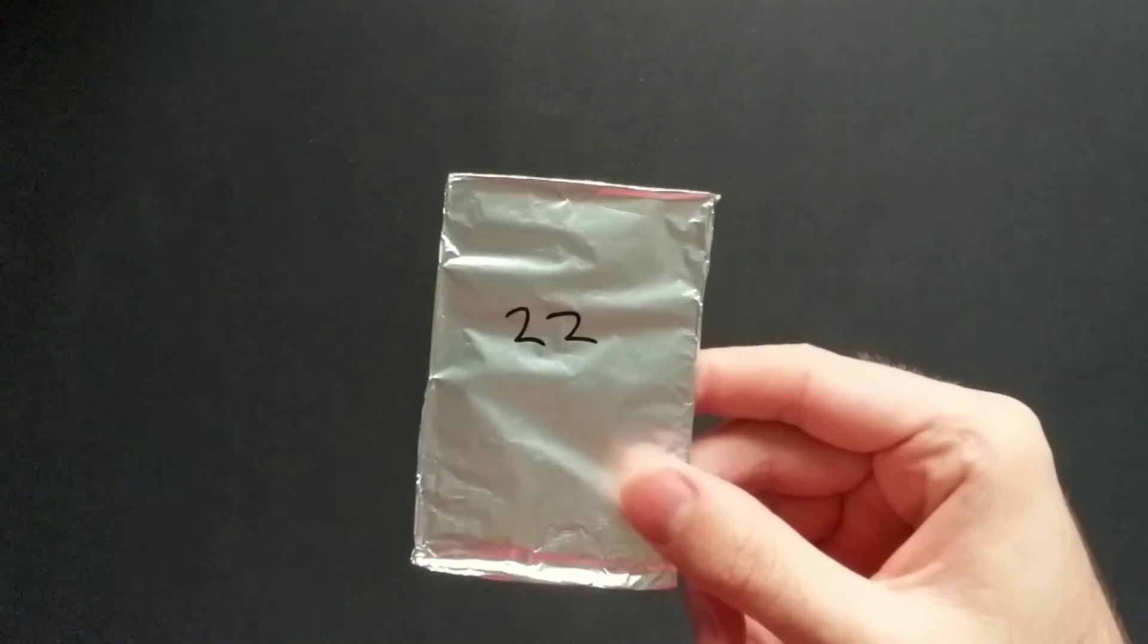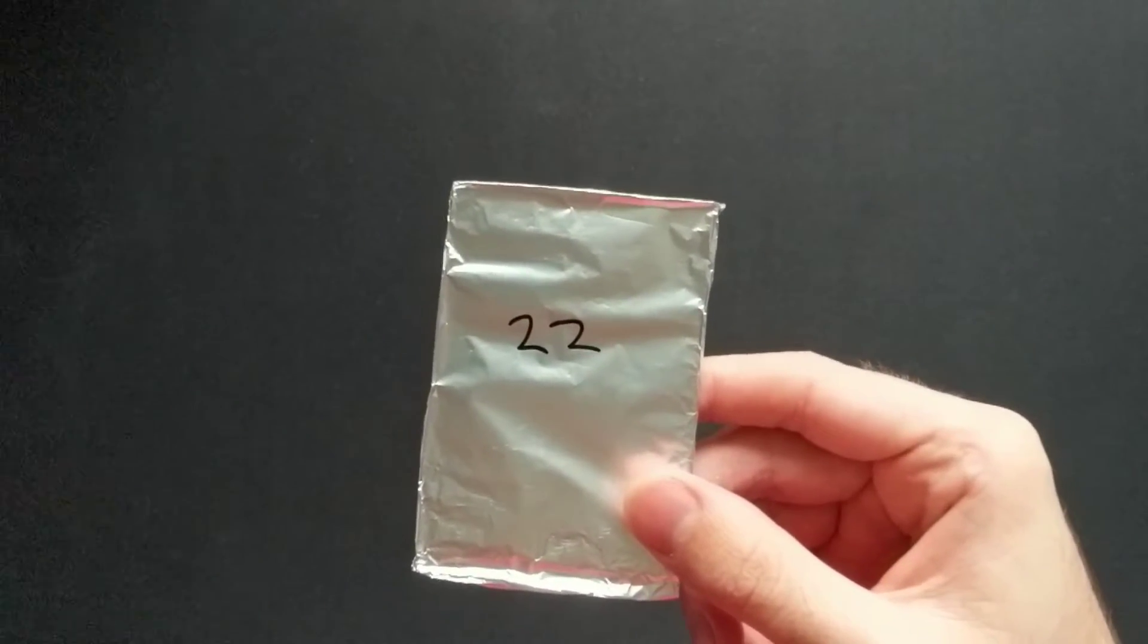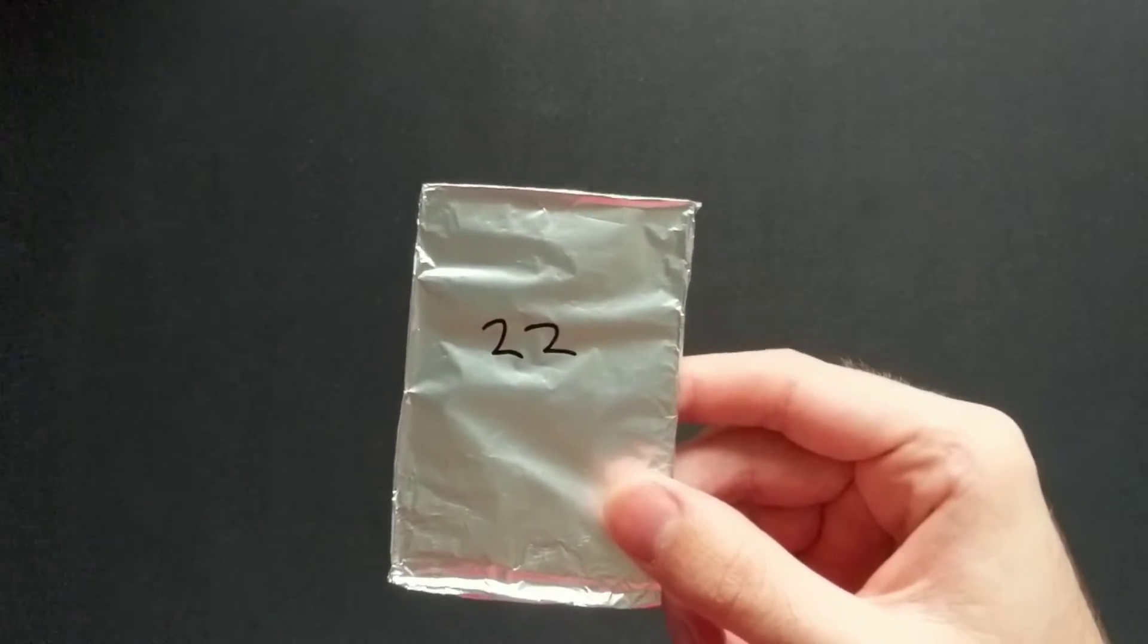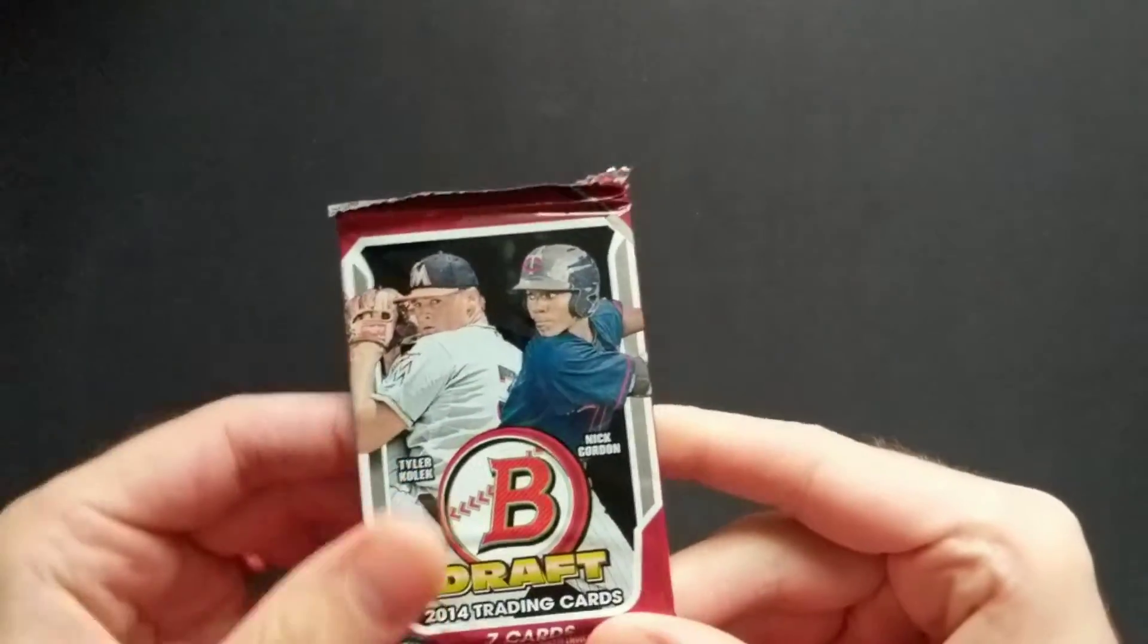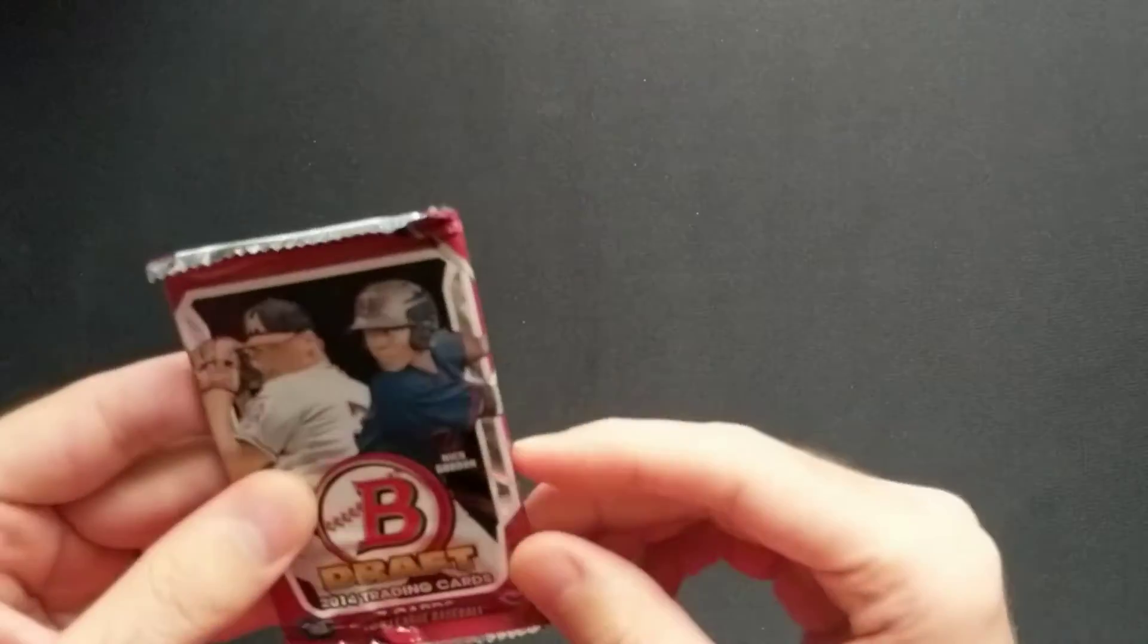Day 22. As we near the end of our advent calendar, three days left, and today's pack is a favorite of mine: 2014 Bowman Draft. We've just had 2020 Bowman Draft come out. We've got seven cards here from a hobby pack.